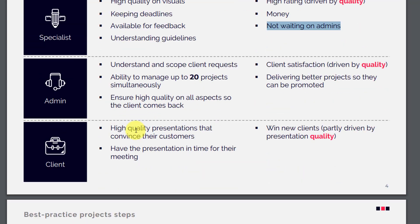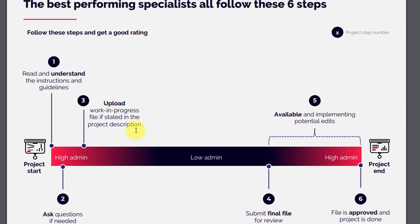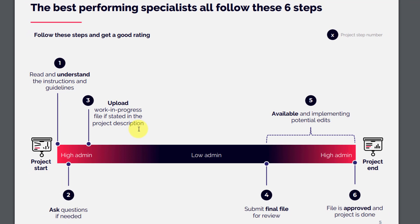The next slide covers the six steps that all best-performing specialists follow. Step one: read and understand the instructions and guidelines — only start work when you're clear. Step two: ask questions if needed; if something is unclear, ask the admins to clarify. Step three: upload a work-in-progress file if stated in the project description, delivering an interim version when requested. Step four: submit the final file for review.